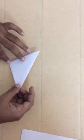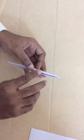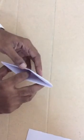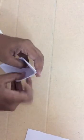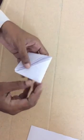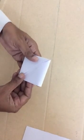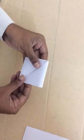And open this by placing your finger like this. And make this like this. Fold this. You will get the square shape.